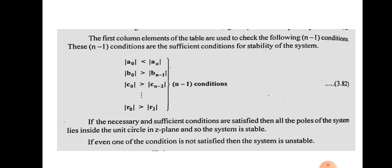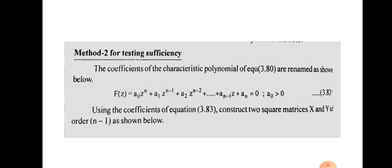To check stability, first verify the necessary condition. If it is not satisfied, we can directly conclude the system is unstable. If the necessary condition is satisfied, proceed to check the sufficient condition using Method 1 or Method 2.